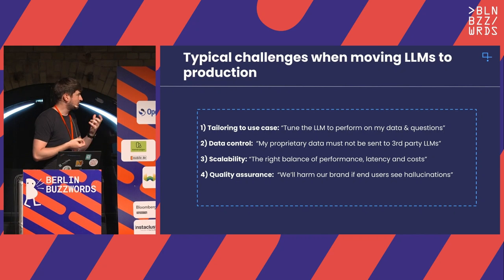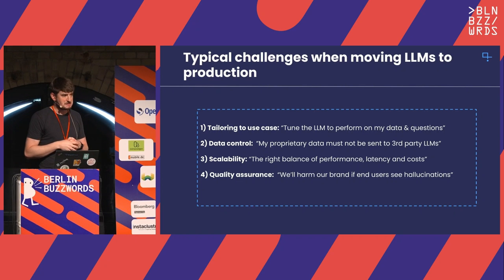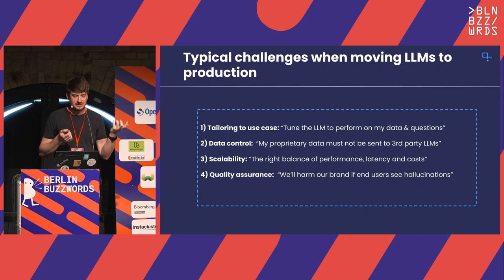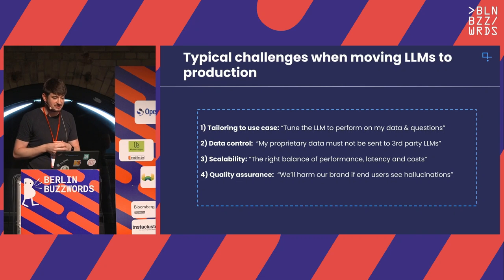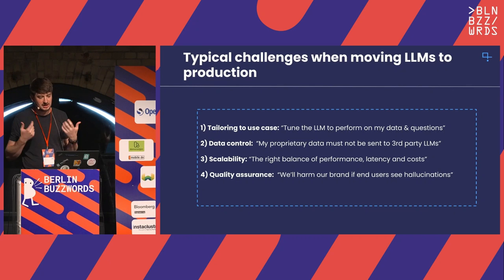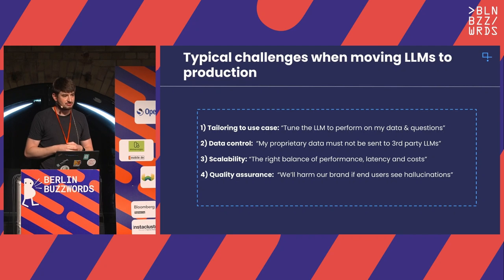The next big question is typically around quality assurance, especially before you go to production. We've all seen these models hallucinating, simply making up answers. If that is an application exposed to your customers, to your end users, this could be extremely damaging to your brand. How can we make sure the model behaves as we want? How can we ensure it does not harm our brand? How do you know as an engineer that it's safe enough? How can you assess quality in a systematic way?